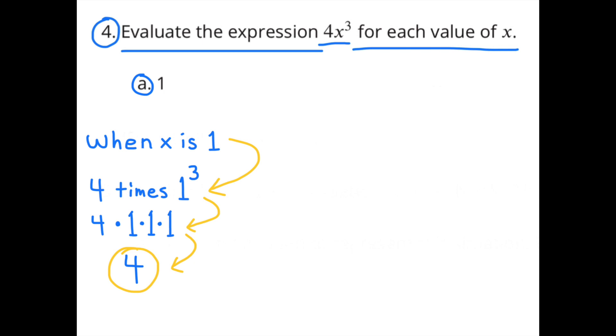A. When the value of x is 1, you're going to substitute the x with a 1. So you'd have 4 times 1³, instead of 4 times x³. And 4 times 1³ is the same as 4 times 1 times 1 times 1, and that equals 4. So when the value of x is 1, 4x³ is equal to 4.